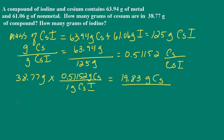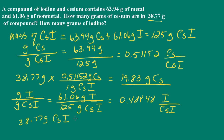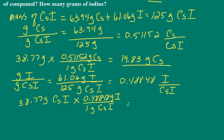Now we do the same for iodine. We find the mass ratio: grams of iodine divided by grams of cesium iodide — 61.06 grams divided by 125 grams of cesium iodide — giving a mass ratio of 0.48848, that's iodine to cesium iodide. We then multiply 38.77 grams by the mass ratio of 0.48848 grams of iodine per 1 gram of cesium iodide, and that gives us 18.94 grams of iodine.